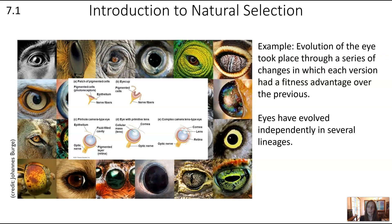Eyes have actually evolved independently in several lineages, which means that the ability to detect visual information from the surroundings has such a fitness advantage that evolution came up with solutions through multiple different pathways. For example, octopuses have a wonderful ability to see and a very complex eye, but it's quite different from ours because it took a different evolutionary pathway back at our most recent common ancestor.